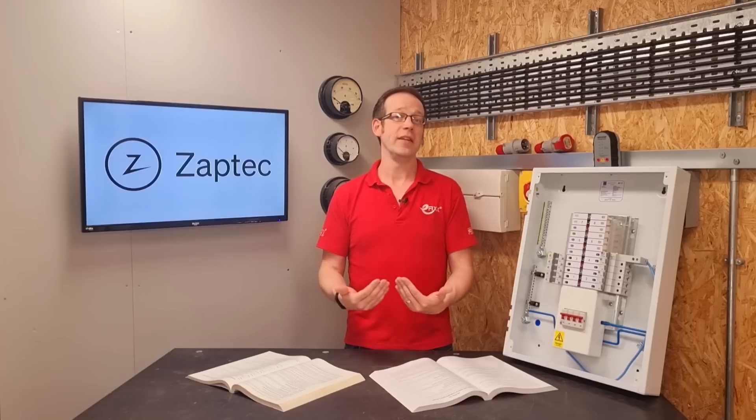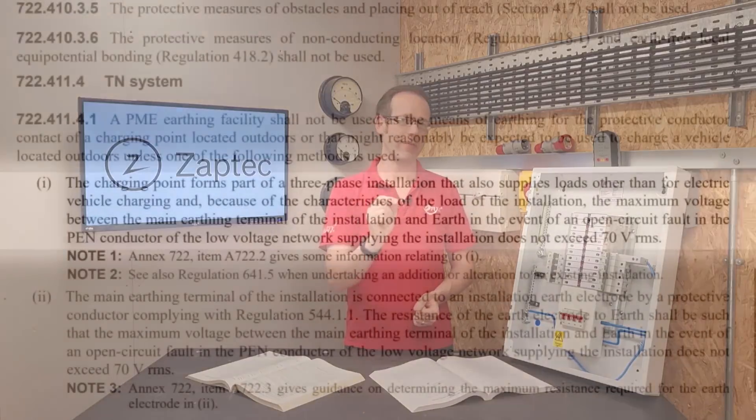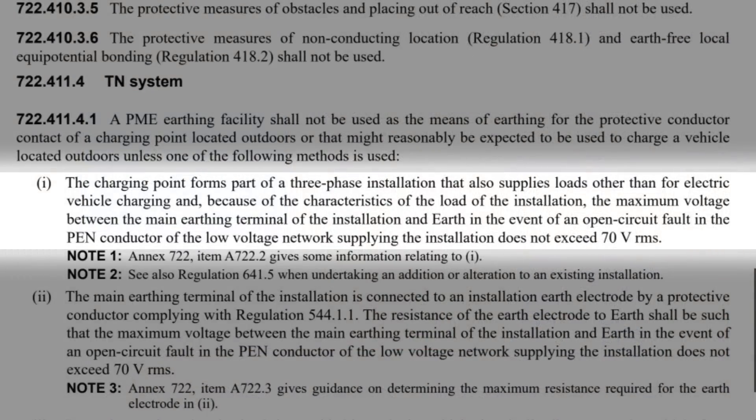However, that brings us nicely on to the end of the old indent we just read because it gives this little caveat: because of the characteristics of the load of the installation, the maximum voltage between the main earthing terminal of the installation and earth in the event of an open circuit fault in the PEN conductor of the low voltage network supplying the installation does not exceed 70 volts RMS.